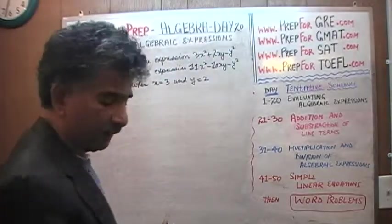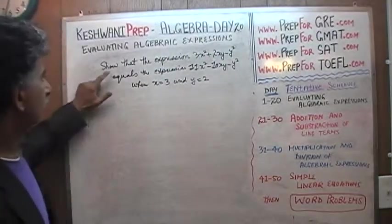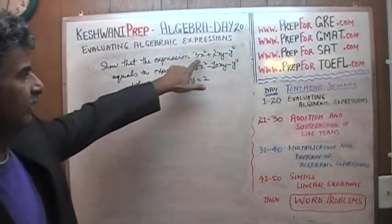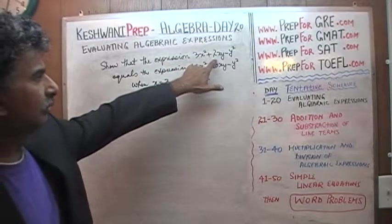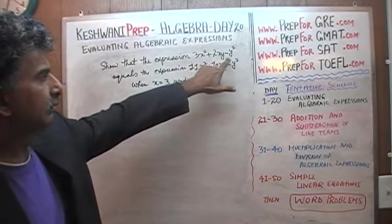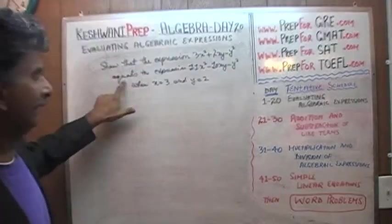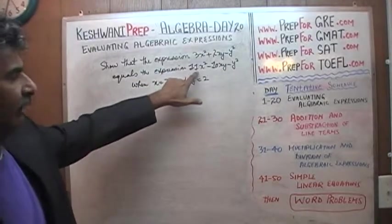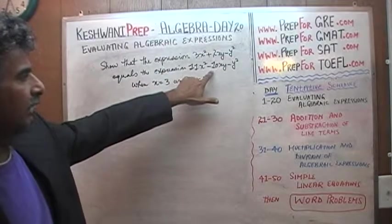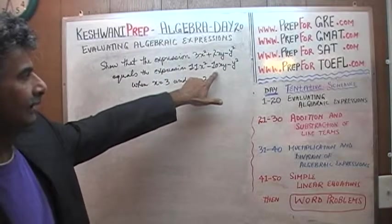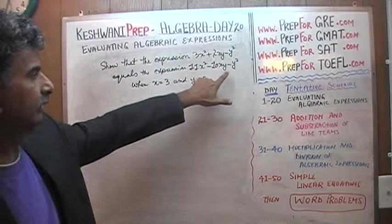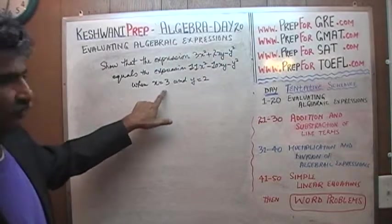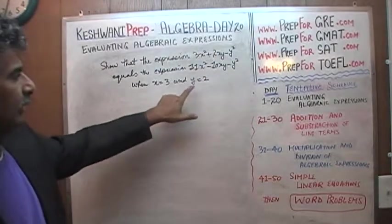The problem is already on the blackboard. It says: show that the expression 3x squared plus 2xy minus y squared equals the expression 11x squared minus 10xy minus y squared when x equals 3 and y equals 2.